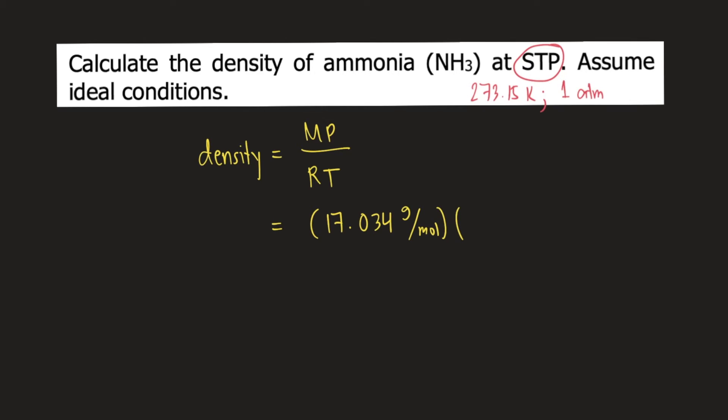P stands for pressure and the standard pressure is 1 ATM. Divided by R, the gas constant, which is 0.0821 liter atmosphere per mole Kelvin. And T is the temperature, which is 273.15 Kelvin, the standard temperature.